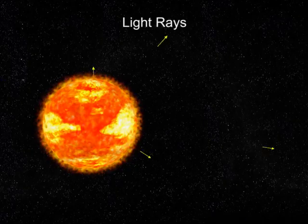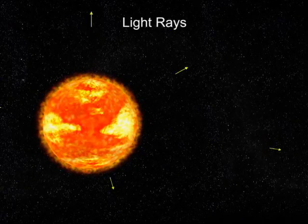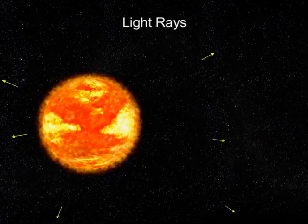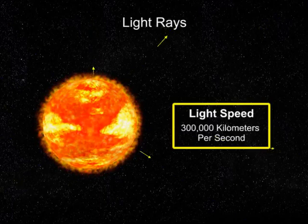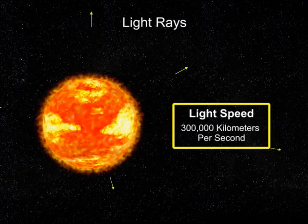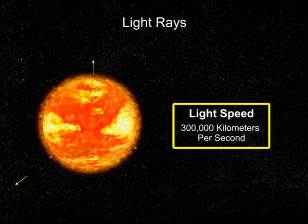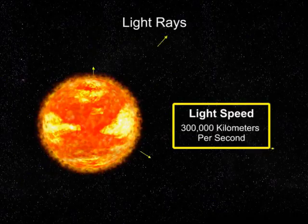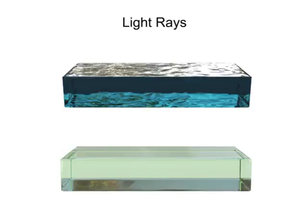Light rays travel through space in a straight line at approximately 300,000 kilometers per second. As light passes through a transparent medium such as water or glass, its speed is decreased.